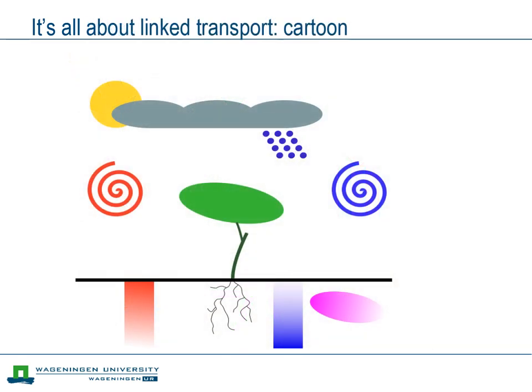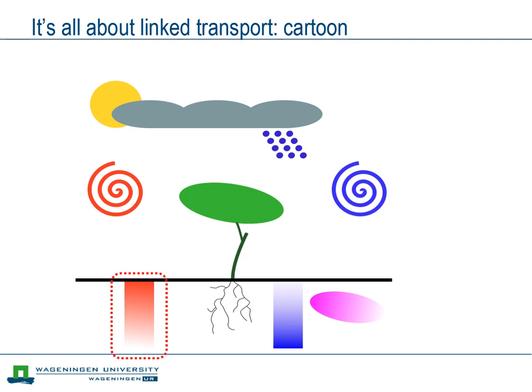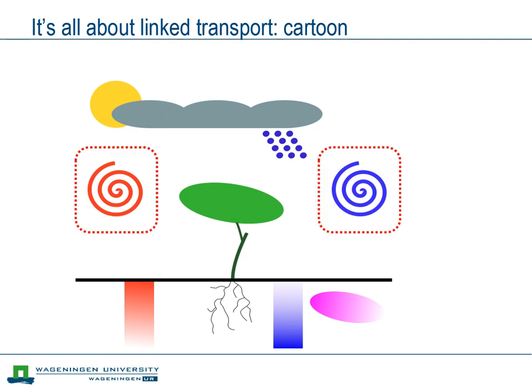To keep track of what we are doing, we have made this sketch of the course. It contains all the ingredients: radiation, heat transport in the soil, and turbulent transport — for instance of heat and water vapor, but also momentum between the surface and the atmosphere.